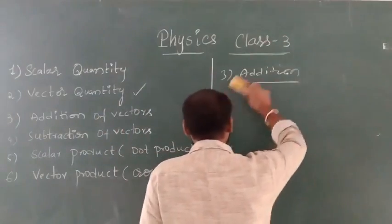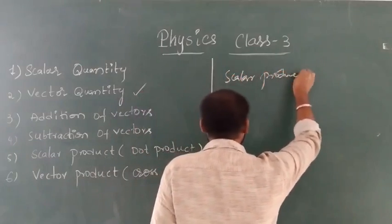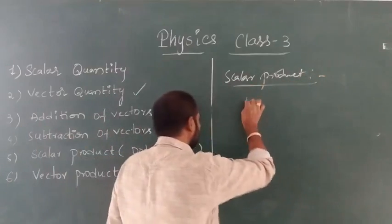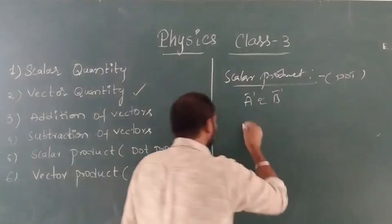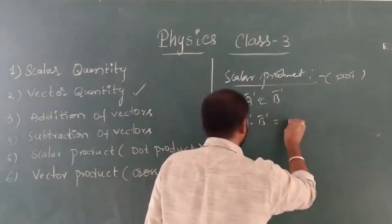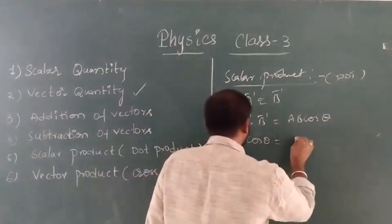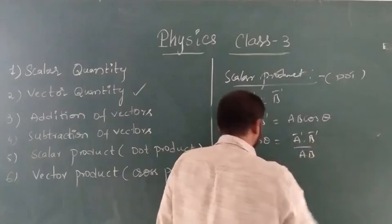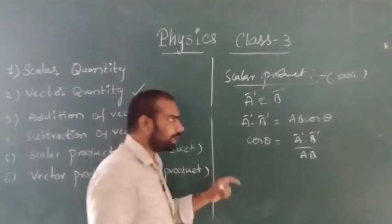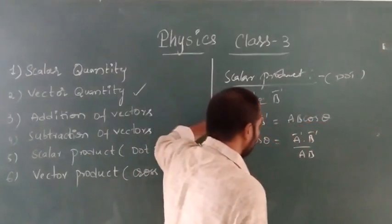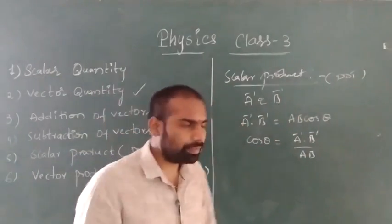Next we have scalar product. What is scalar product? If you take any two vectors A-bar and B-bar, the scalar product or dot product is represented as A-bar · B-bar, which equals AB cos θ. So cos θ equals A-bar · B-bar divided by AB. If the cosine value is positive, the dot product is positive; if the cosine value is negative, the dot product will be negative.